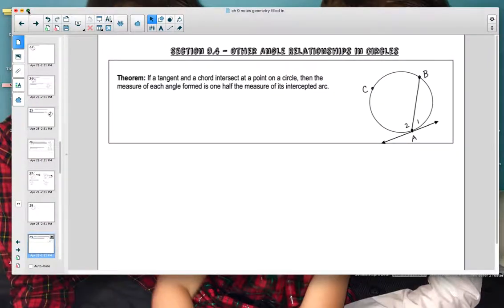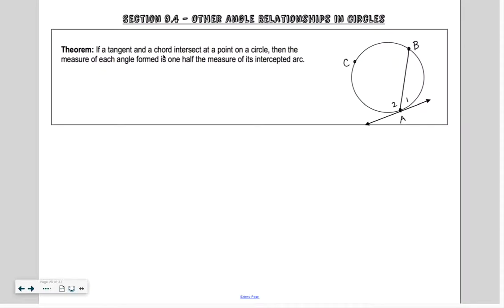Section 9.4 is on other angle relationships in circles. If you remember last time we talked about inscribed angles and intercepted arcs. Do you guys remember how I talked about like Pac-Man eating the arc? So if this is 50, what was this angle? 25, right? It ends up being half of the intercepted arc.